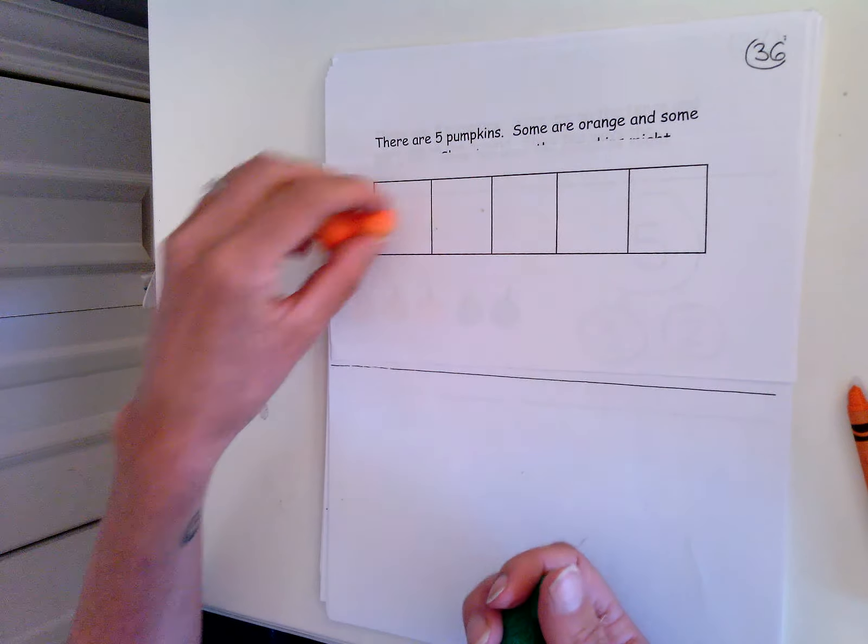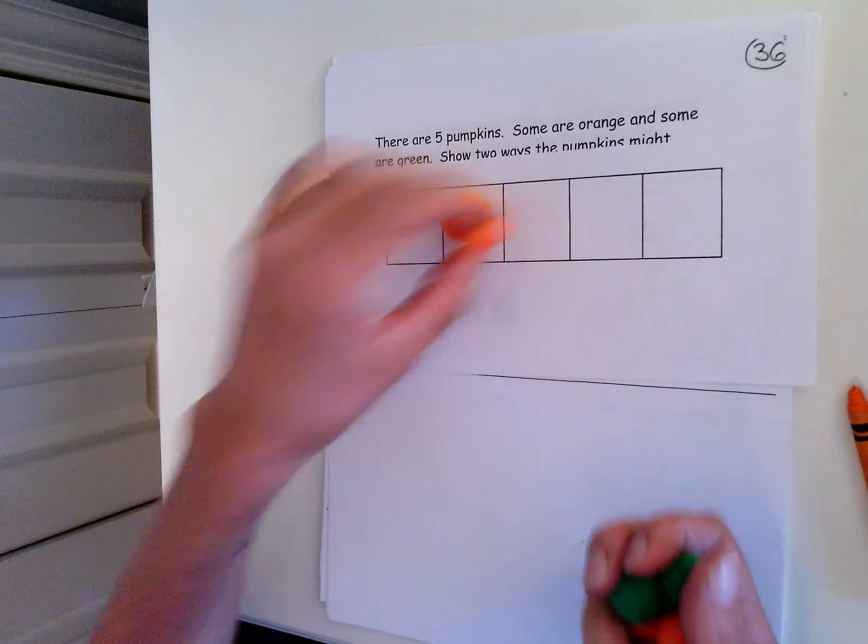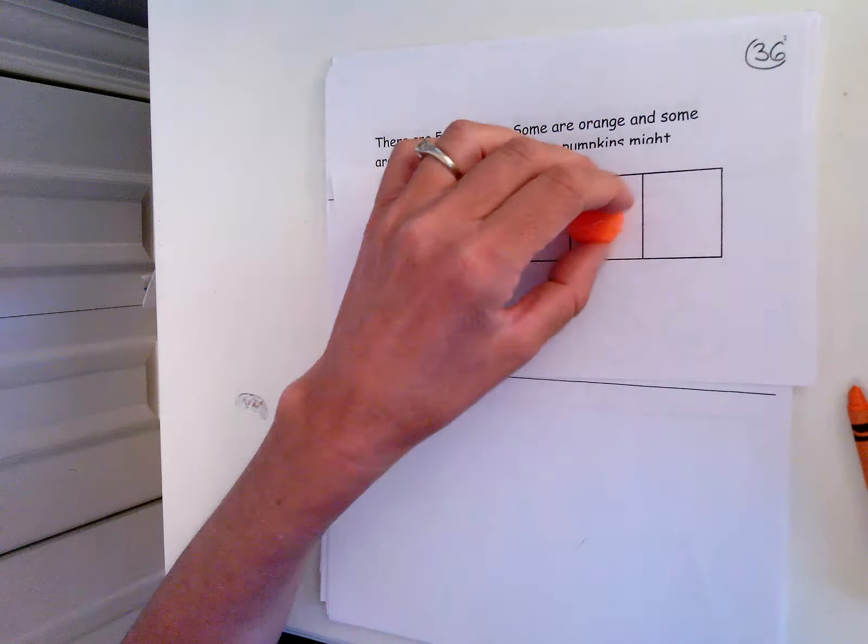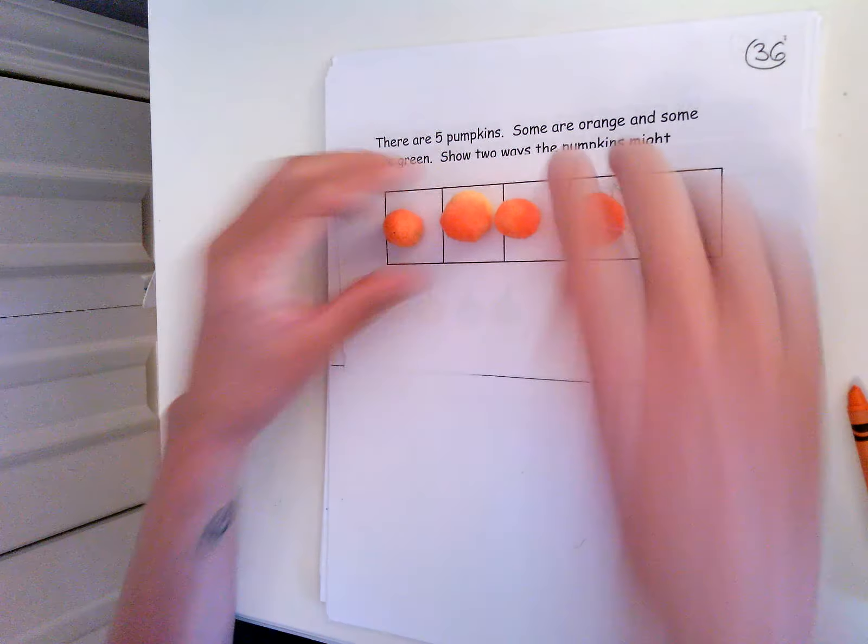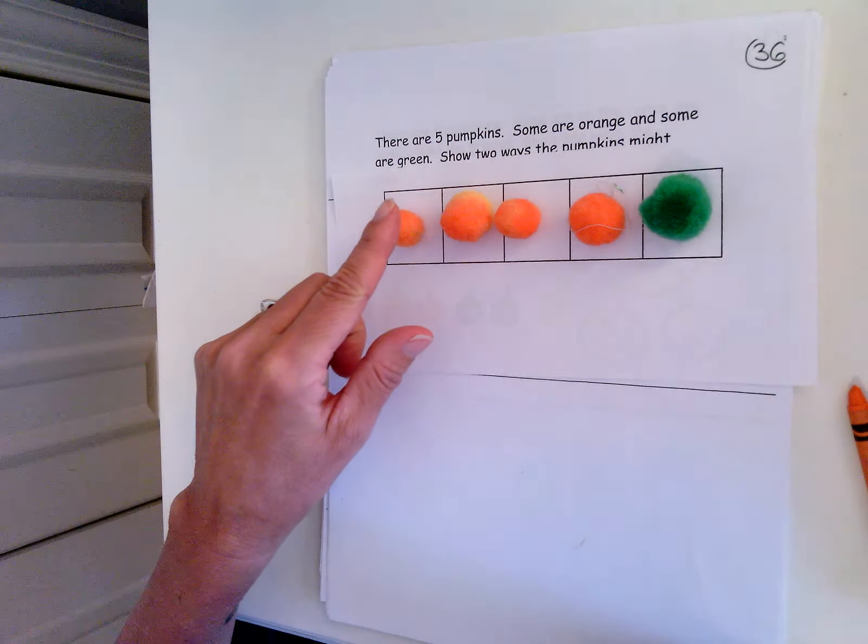Let's try this one. What if I had four orange pumpkins? How many would be green? One. Let's see if there's five. One, two, three, four, five. There are five pumpkins.